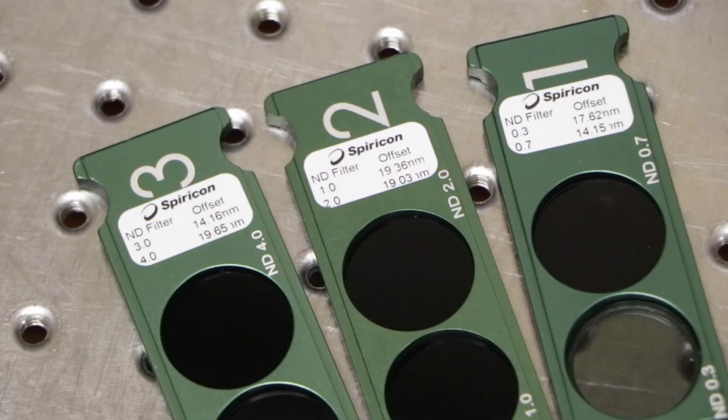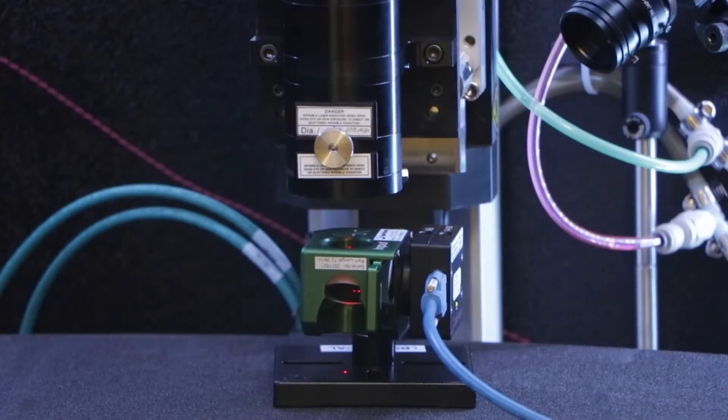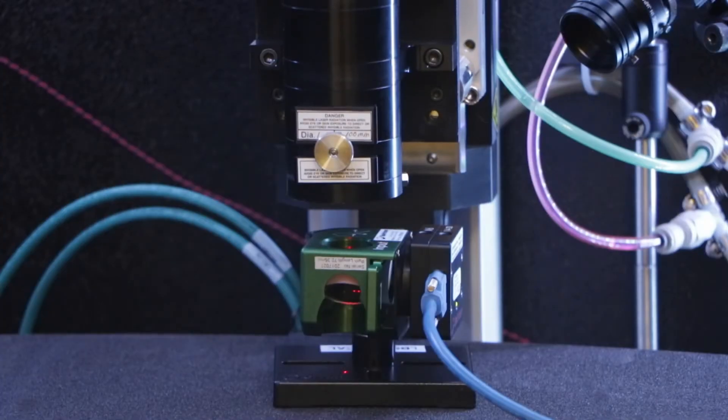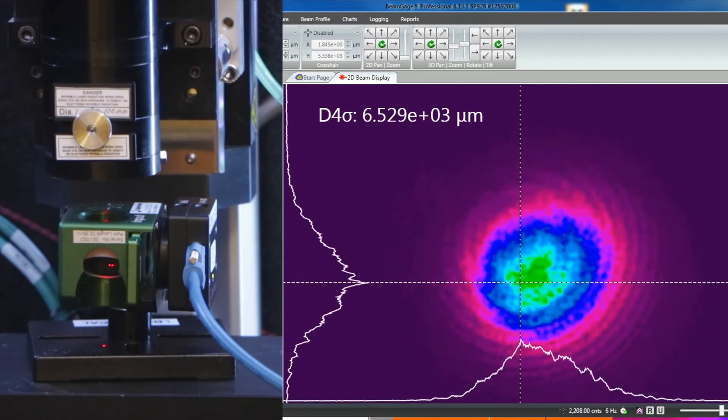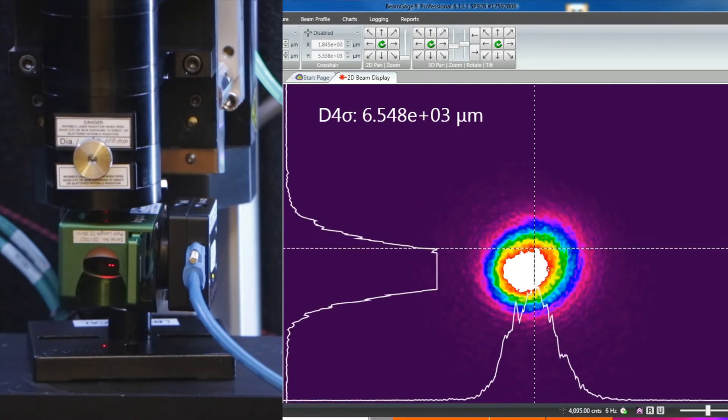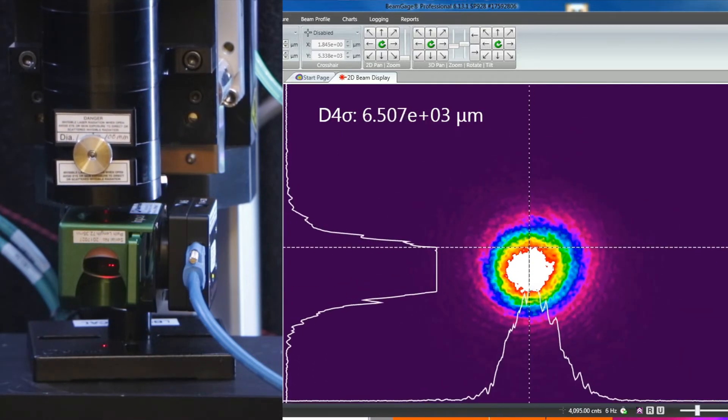The optical path length is provided for each ND filter. The assembly is placed below the final focusing lens of the laser at a distance equal to the expected focal length. The focal spot is found by moving the assembly closer and farther from the beam until the smallest spot size is seen.